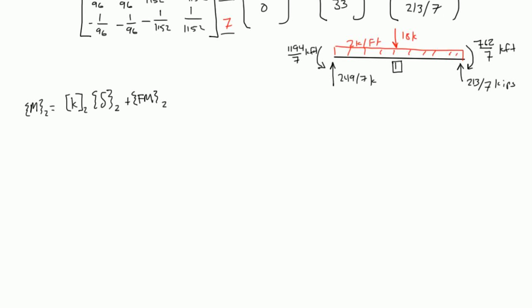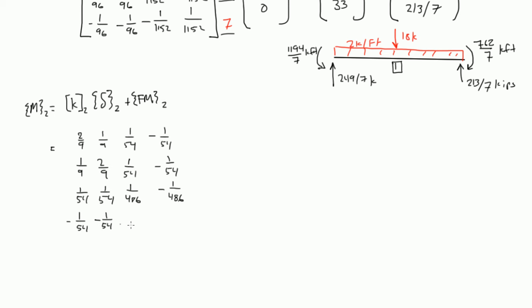And remember our k sub 2 was 2 over 9, 1 over 9, 1 over 54, negative 1 over 54. Then you had 1 over 9, 2 over 9, 1 over 54, negative 1 over 54. And then you had 1 over 54, 1 over 54, 1 over 486, negative 1 over 486. Then you had negative 1 over 54, negative 1 over 54, negative 1 over 486, and then finally 1 over 486. That was your k sub 2 matrix, what we found very early on.